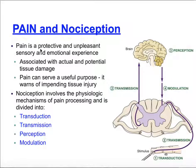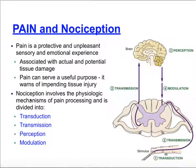Pain, although unpleasant, is actually protective — it's an important sensation. It's associated with acute tissue damage or even potential tissue damage, which is why pain is so important: it tells us something is wrong so we seek treatment before it becomes worse, and warns us of impending tissue injury. Pain involves several processes: transduction, transmission of the pain signal, perception, and modulation.